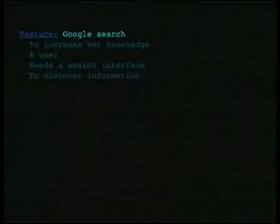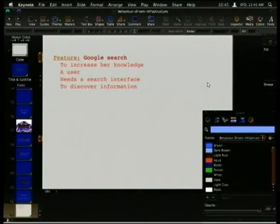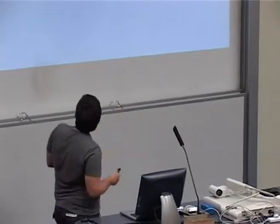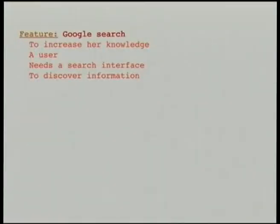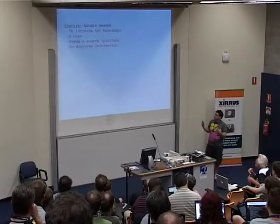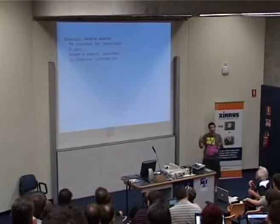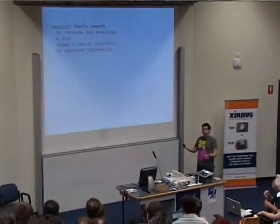Some terminology so we can understand how Cucumber fits into this. You've got a feature — a module of common functionality. Generally you have one feature per file. This is what a feature looks like. We've got the name of the feature and a preamble. The preamble is purely a high-level definition of what this feature is actually trying to achieve — it's not actually executed at all.